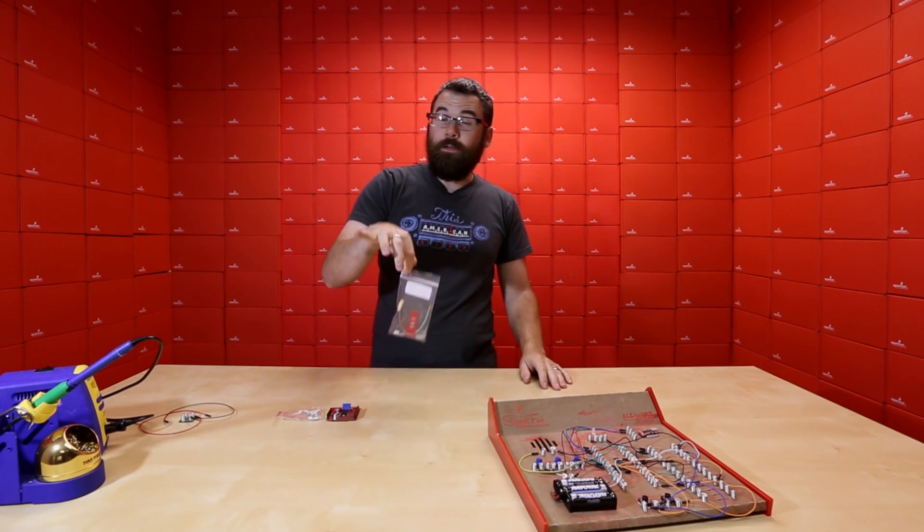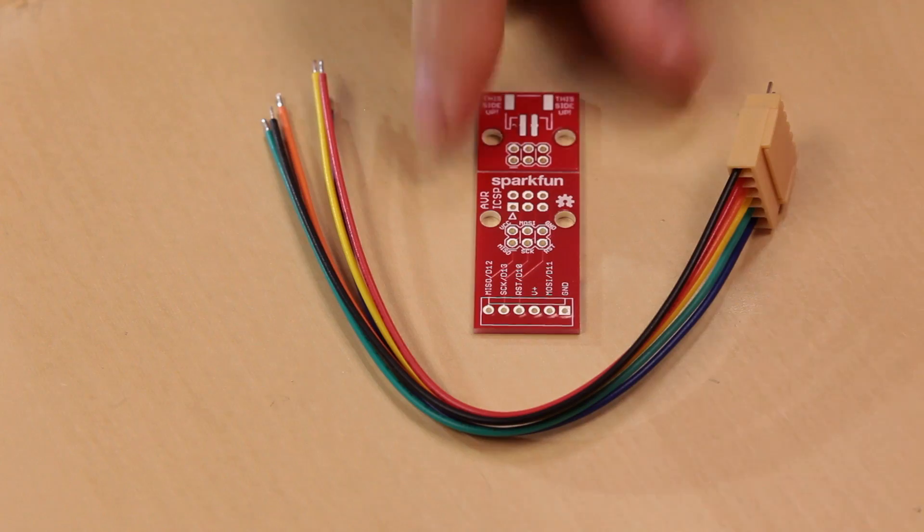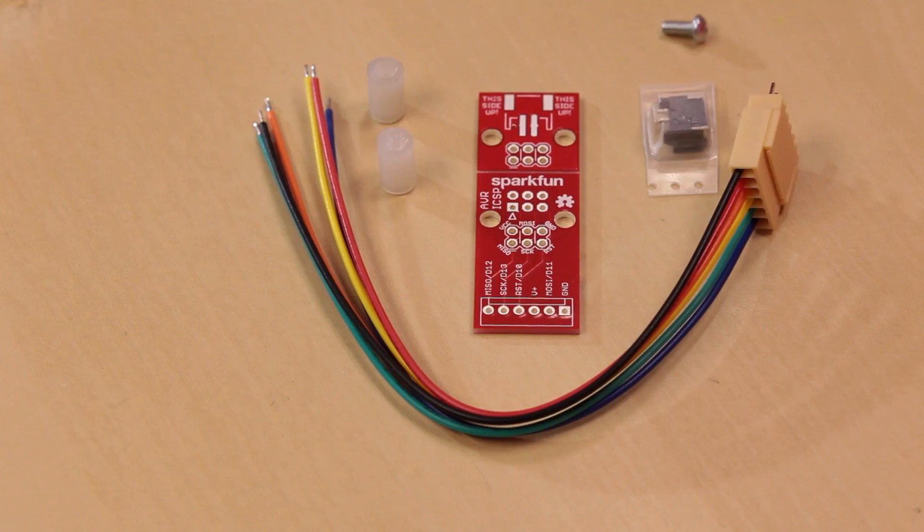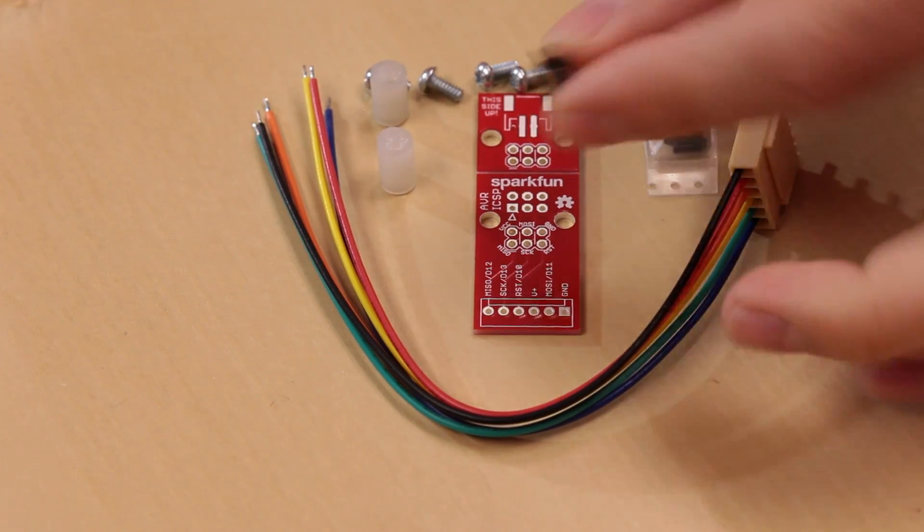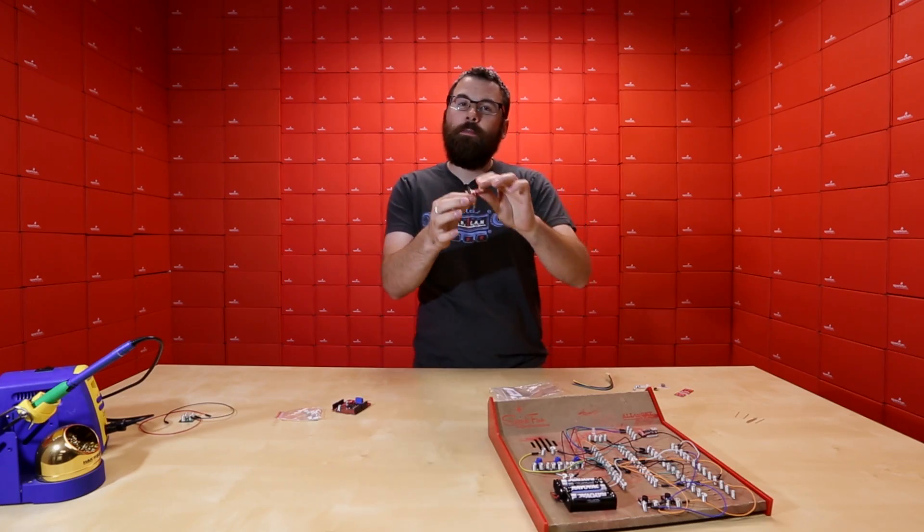Next up we've got this little kit. This is the ISP pogo adapter. We have this nice cable. We've got the PCB. Nice little JST connector. We've got a couple of standoffs. We've got the screws. The actual six pin header. And then we've got six pogo pins. So when you get it put together it looks a little something like this.